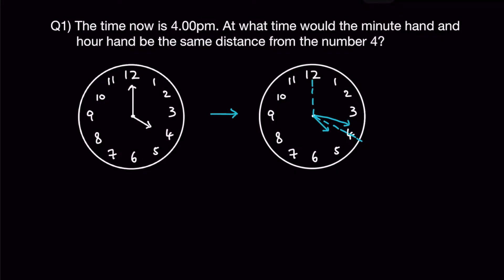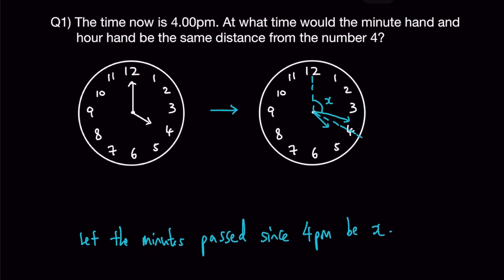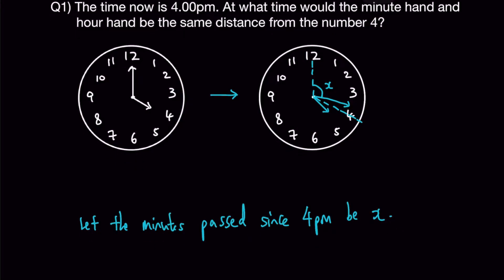We let x be the minutes past since 4pm, as denoted on the clock. You have to understand that when the minute hand moves one full round, it moves through 12 numbers.